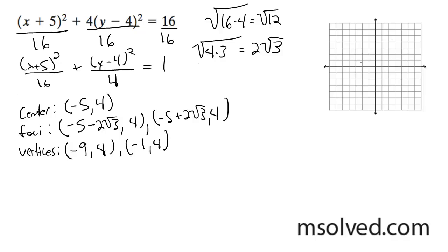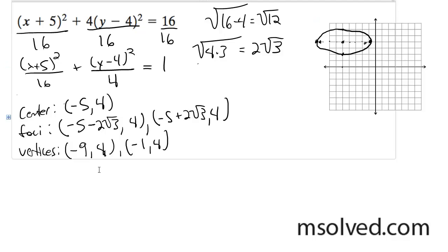All right, so we go ahead and graph this. I don't know if I'm going to have enough room here. So my center is at negative 5, 4. Yeah, I'm not going to have enough room. The minor axis is going to go up 2 and down 2, and then 4 out on the major axis. The foci distance is 2 root 3, which is about 3.5. And that's it — that's our graph, and those are the answers.